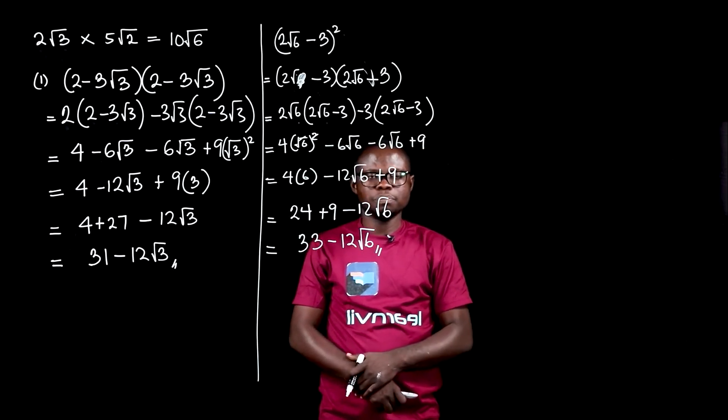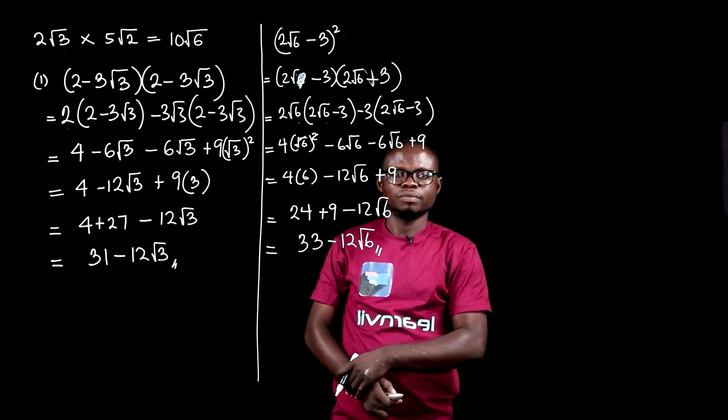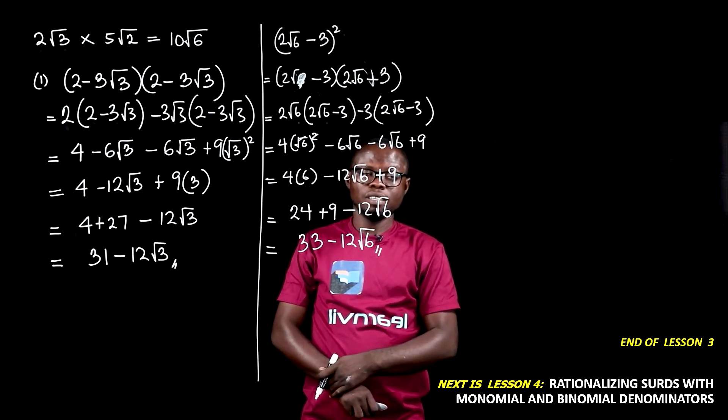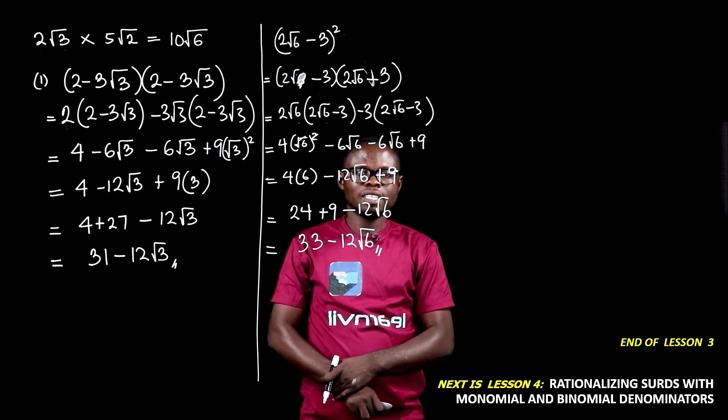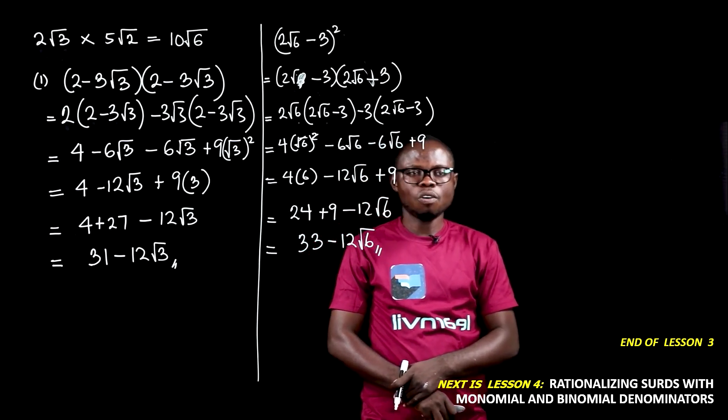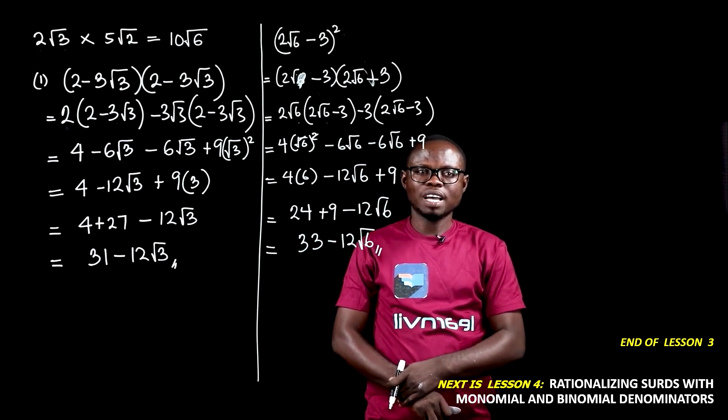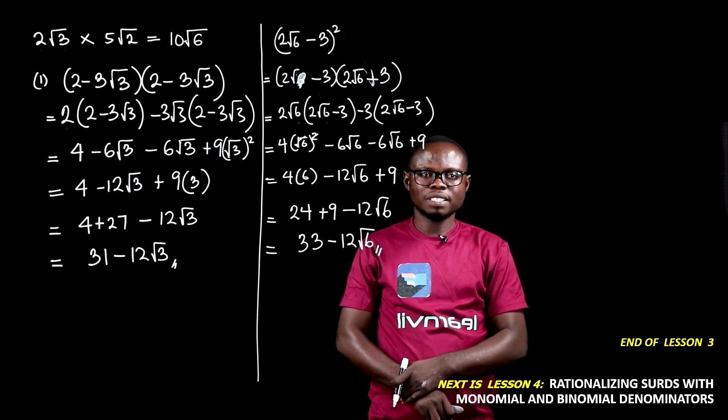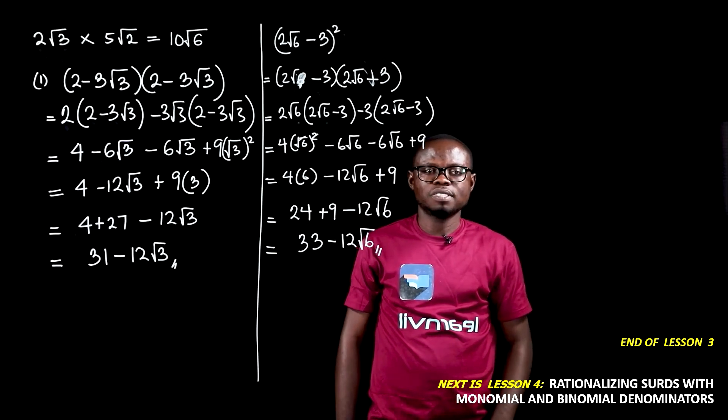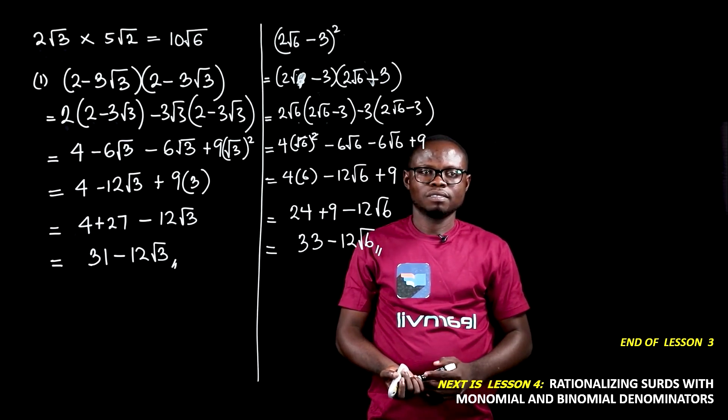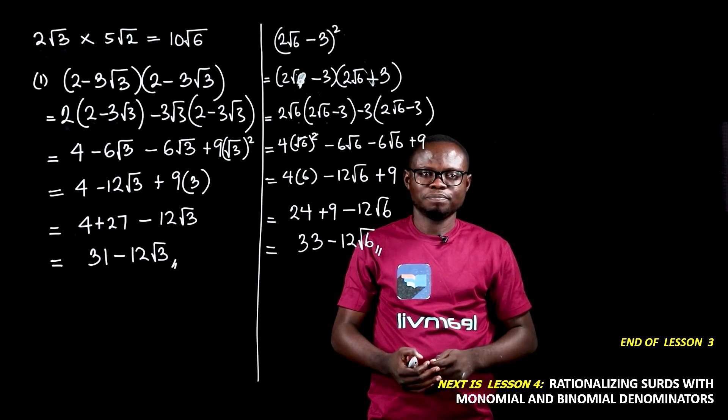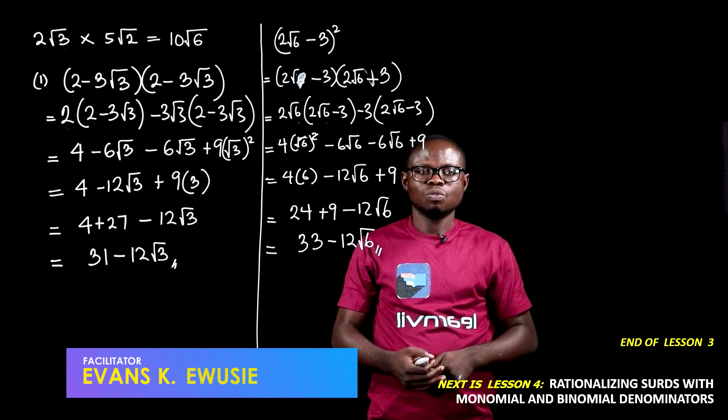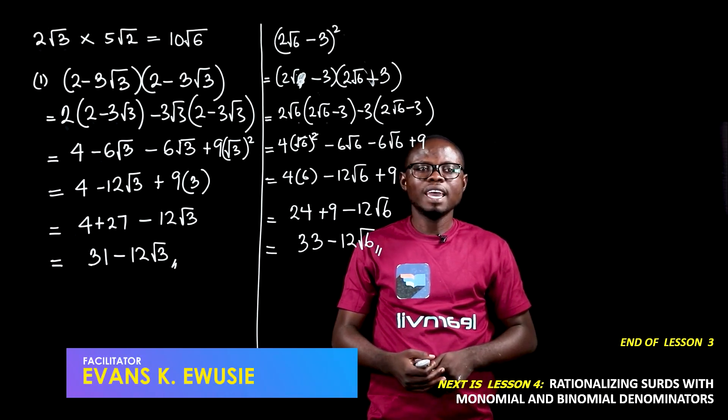That was quite simple. We have come to the end of this lesson. In this lesson, we have learned to apply the distributive property of multiplication over addition and subtraction, as well as the rule governing the multiplication of surds. See you in the next lesson, which will talk about rationalizing surds with both monomial and binomial.